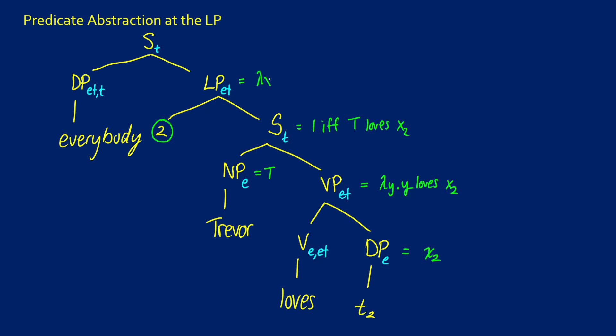This means that now we're going to get lambda X2 dot T loves X2. So this is where the binding has occurred. Now we've found the object with what we're being raised with. So now we can apply this as normal.